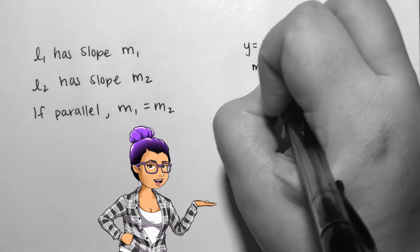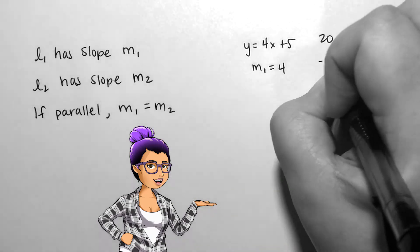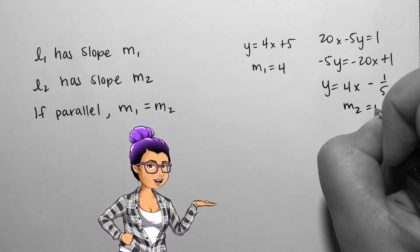The pair of lines y equals 4x plus 5 and 20x minus 5y equals 1 are parallel.